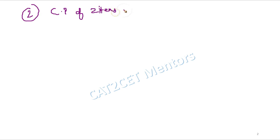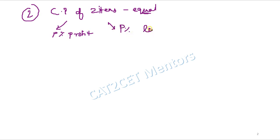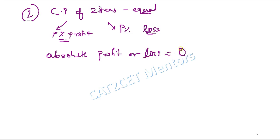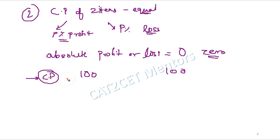Moving on, we discuss case number two. In this case, the cost price of two items is equal, and one is sold at p percent profit while another is sold at p percent loss. In this scenario, the absolute profit or loss is equal to zero. For example, suppose two articles each have a cost price of rupees 100.